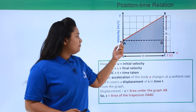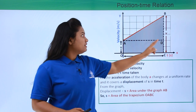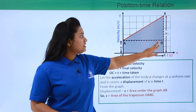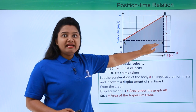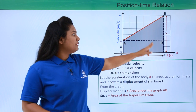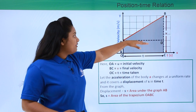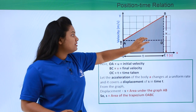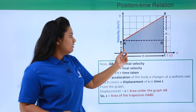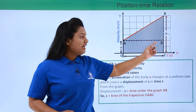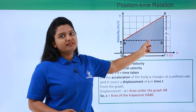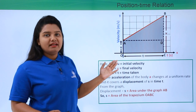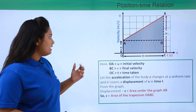Now let us draw a perpendicular line from point A which touches BC at point D. This construction has been made to find the area of the whole trapezium. We will find the total area by first finding the area of the triangle and the area of the rectangle OABC, then adding these two areas together — that is the procedure we will follow to find the displacement.